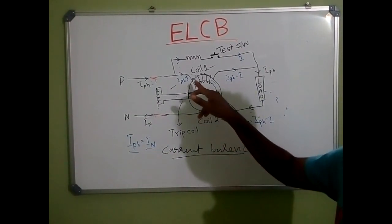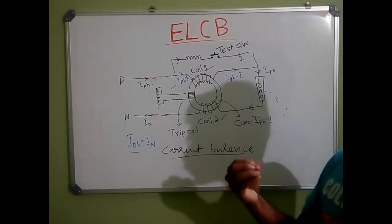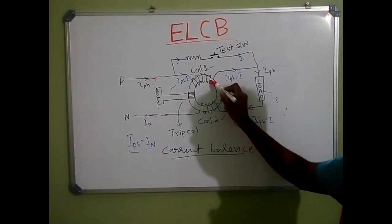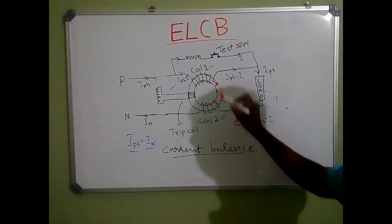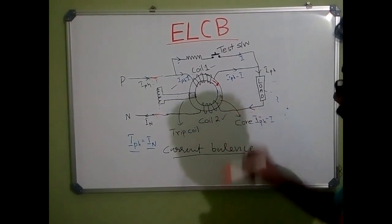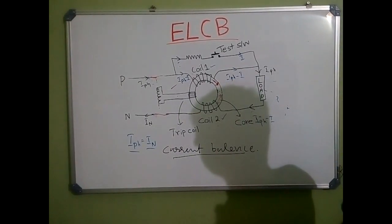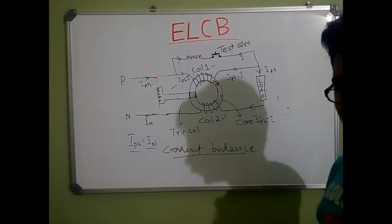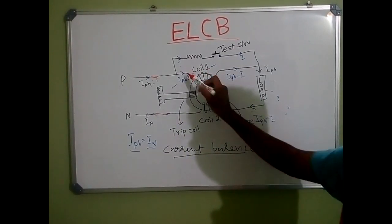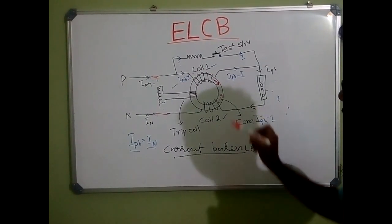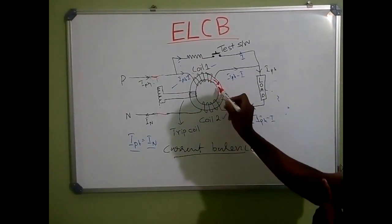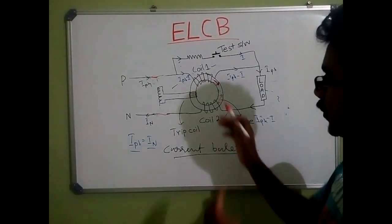When a current passes through a coil, an MMF is produced in that coil. Due to current through Coil 1, an MMF is produced in one direction. Due to current through Coil 2, an MMF is produced in the opposite direction. The number of turns in Coil 1 and Coil 2 are the same. So the MMF produced by Coil 1 and Coil 2 are equal. Since I-phase and I-N are equal, the net MMF in this core will be zero — one is clockwise and the other is anticlockwise.